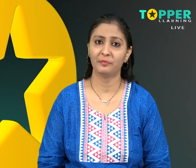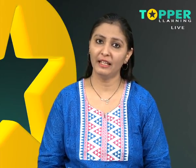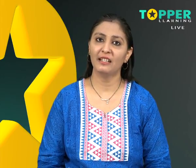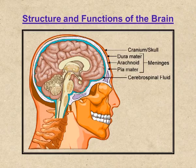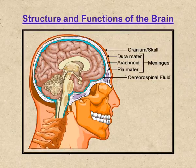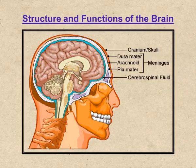Let us now proceed to study about the central nervous system in detail. The central nervous system consists of the brain and the spinal cord. The brain is well protected inside a bony structure called the cranium or the skull. Three membranous coverings called the meninges cover the brain. The outermost tough fibrous membrane is called the durameter. The middle thin and delicate membrane is called the arachnoid membrane, which provides a web-like cushion to the brain.